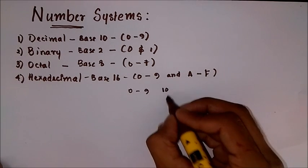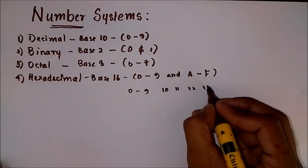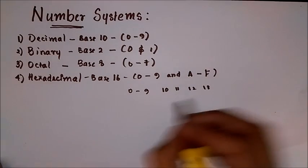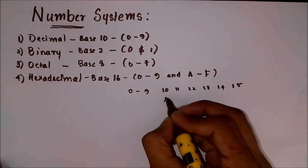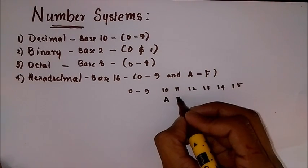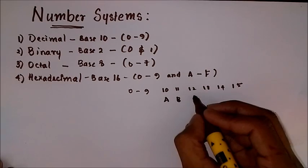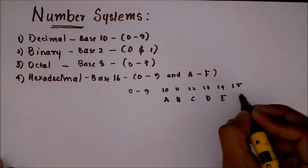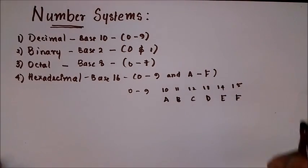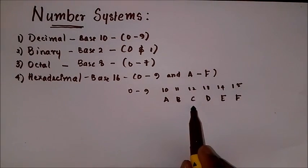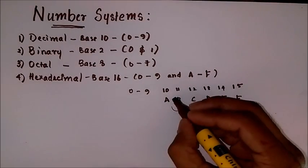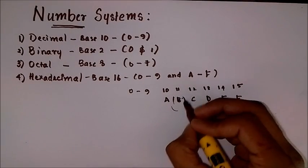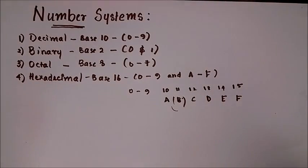In hexadecimal, the values 10, 11, 12, 13, 14, and 15 are represented by the letters A, B, C, D, E, and F. So if we have the letter B, we are going to take the value 11 to calculate the conversion.